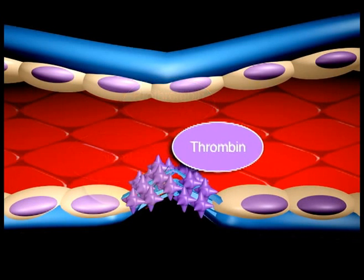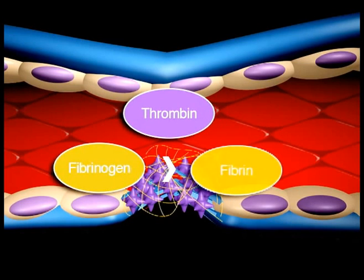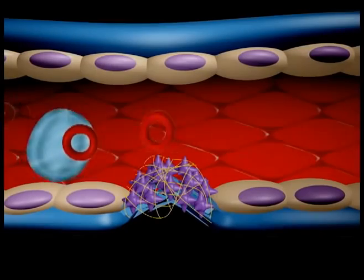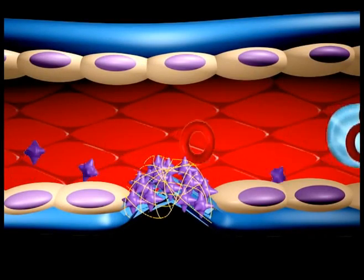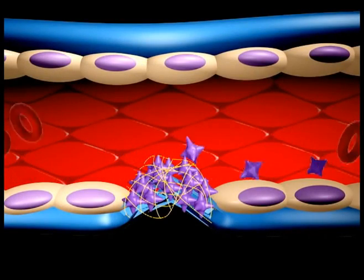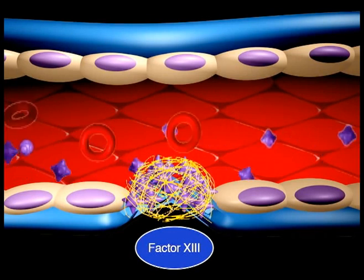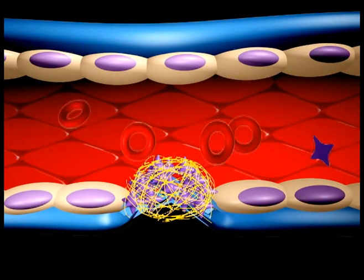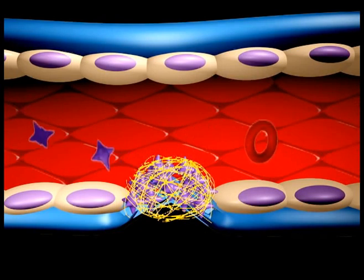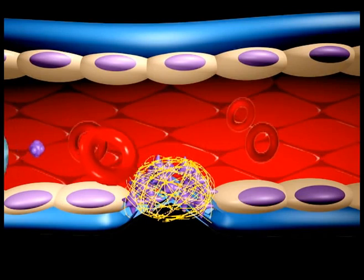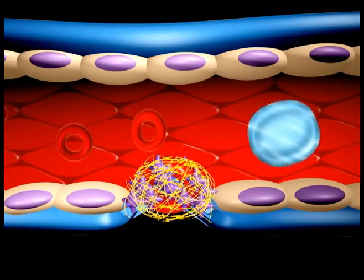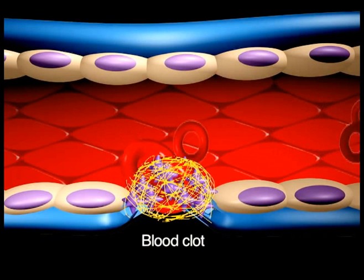Prothrombin activator converts prothrombin to thrombin. Thrombin converts fibrinogen to fibrin. Fibrin initially forms a loose mesh, but then factor XIII causes the formation of covalent crosslinks, which convert fibrin to a dense aggregation of fibers. Platelets and red blood cells become caught in this mesh of fiber, thus the formation of a blood clot.